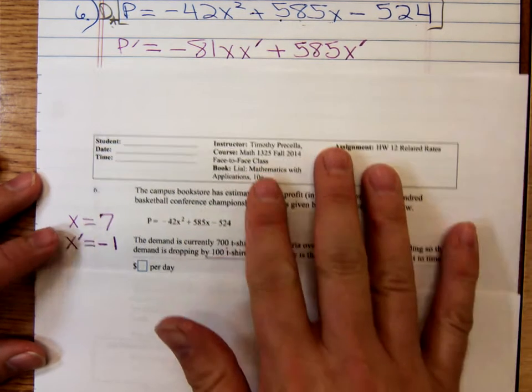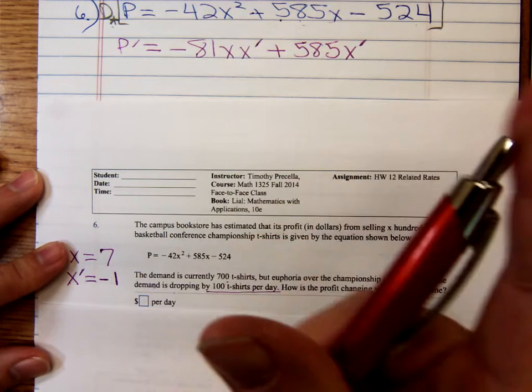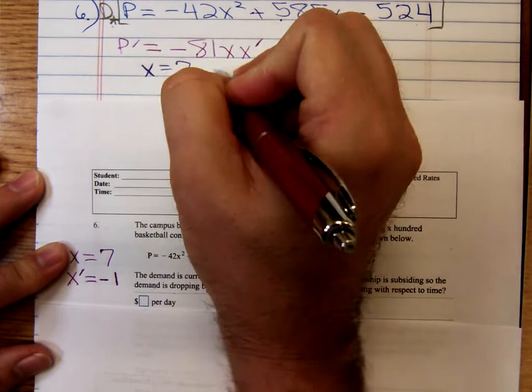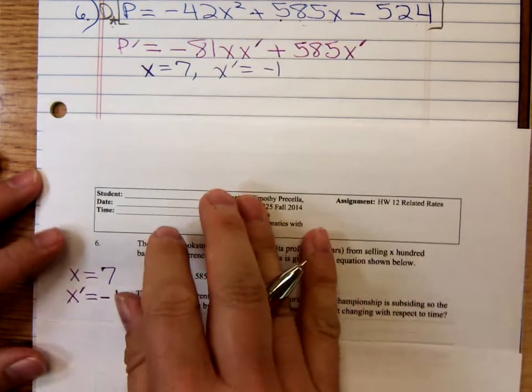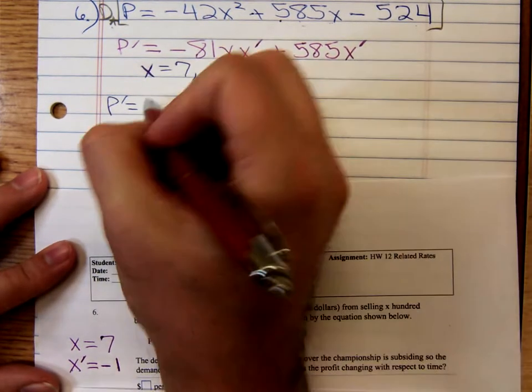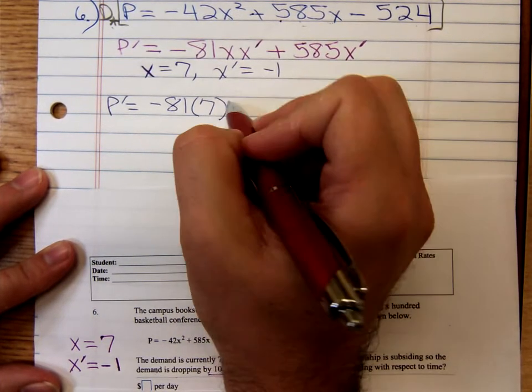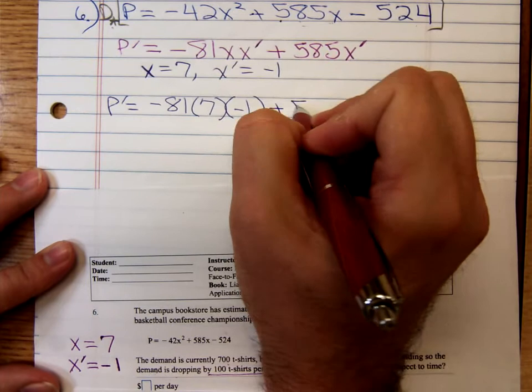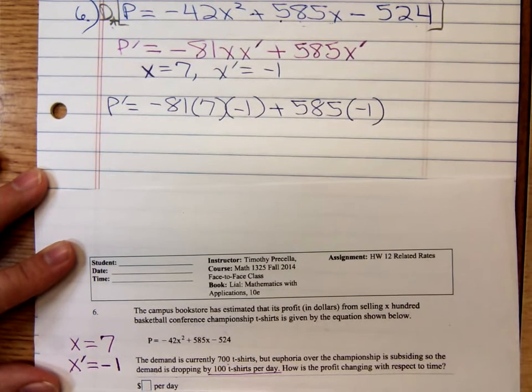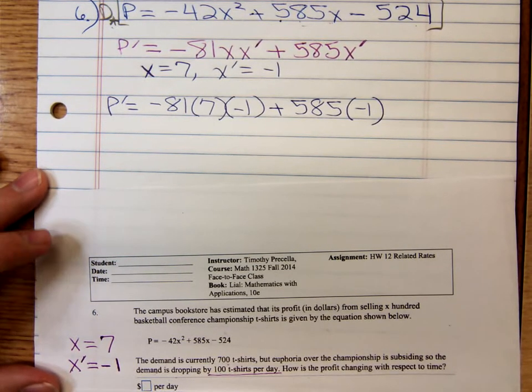So, substitute in. We know that when x equals 7, when x equals 7, x prime is equal to negative 1. So, we have p prime equals negative 81 times 7 times negative 1 plus 585 times a negative 1. And punching that into my calculator, I am getting, let's see, negative 81 times 7.